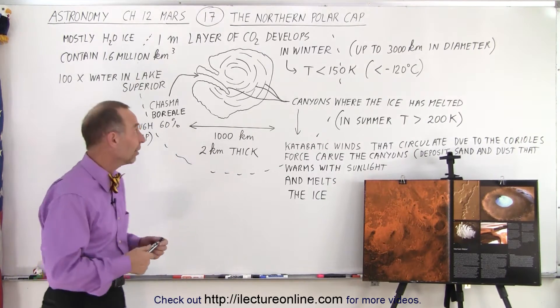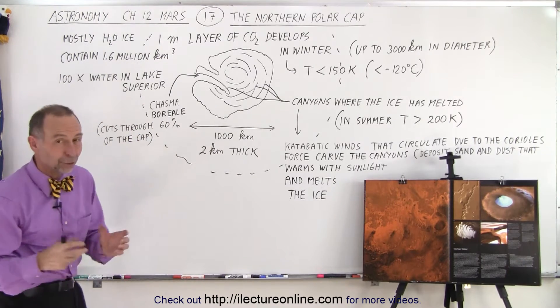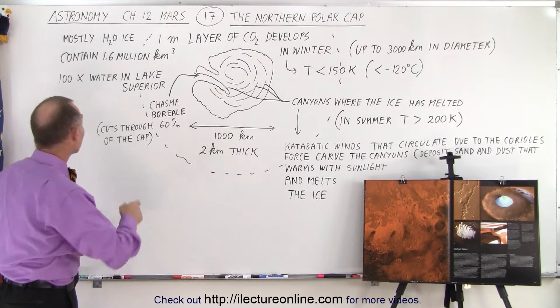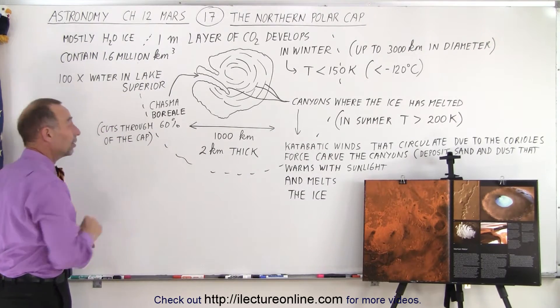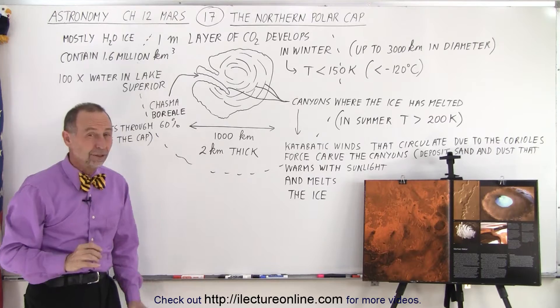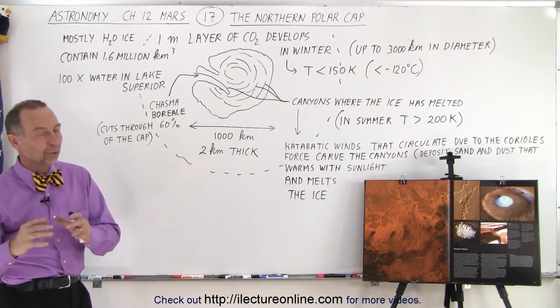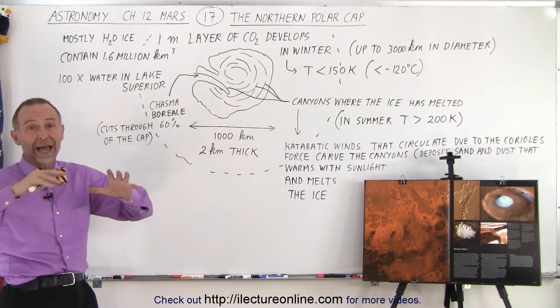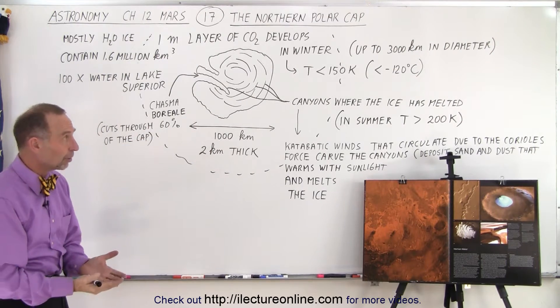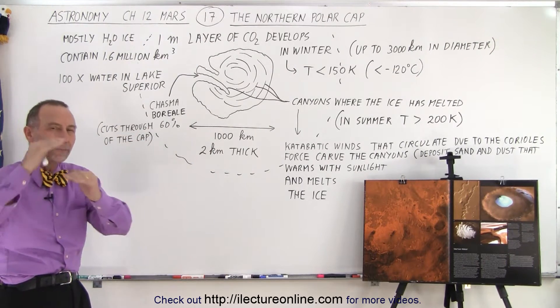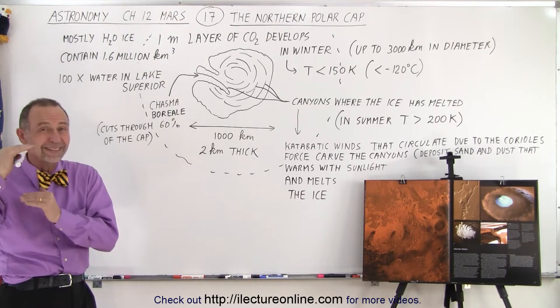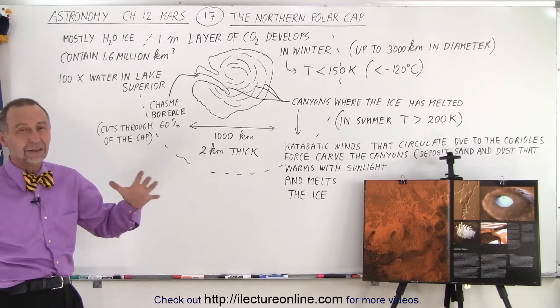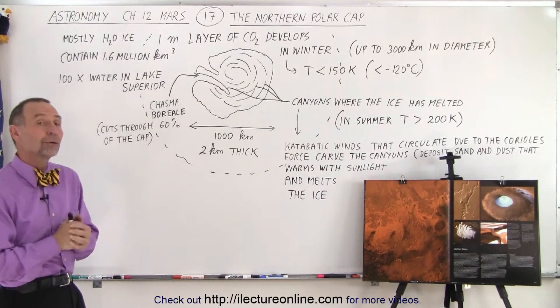When you compare that to the amount of water in Lake Superior, if you were to melt all the water in the Northern Polar Cap, you would have about 100 times as much water. If all the ice were to melt and you could have liquid water on the surface of Mars, it would cover the planet with about 11 meters, about 36 feet of water. There's an incredible amount of water ice in the Northern Polar Cap of Mars.